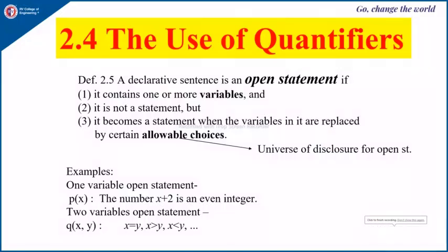A declarative sentence is an open statement if it satisfies the following conditions. First, it contains one or more variables. Second, it is not a statement, but it becomes a statement when the variables in it are replaced by certain allowable choices. These allowable choices will form the universe of disclosure for the open statement.